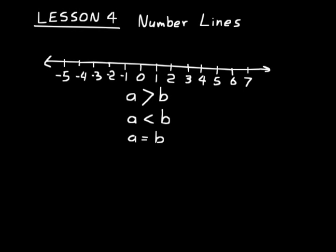Look at our number line. Let's compare 2 and negative 2. We could say that 2 is greater than negative 2 because it's to the right — you always read a number line from left to right; the farther to the right you go, the bigger the numbers get. Another way to write this is that negative 2 is less than 2. We could not say 2 equals negative 2. When comparing two different numbers, use greater than or less than, not the equal sign.